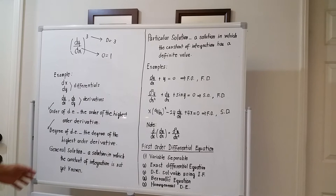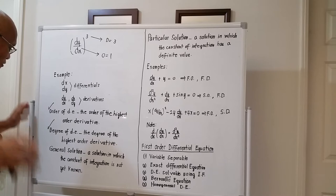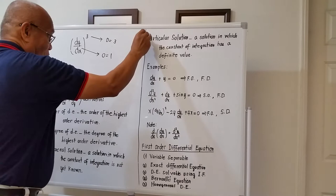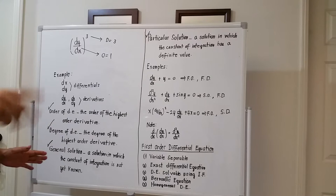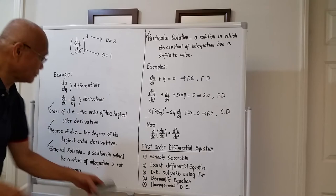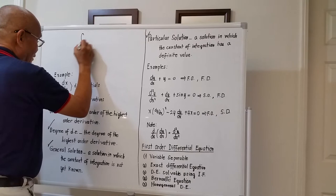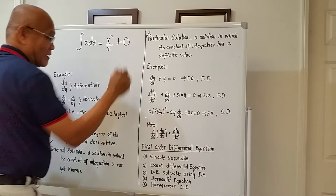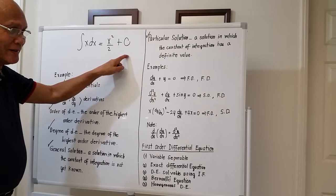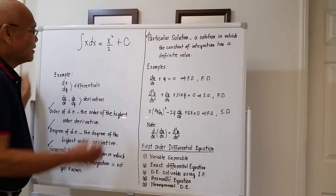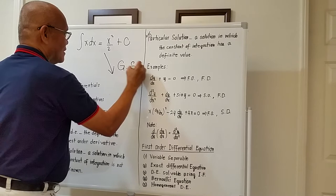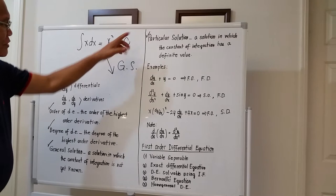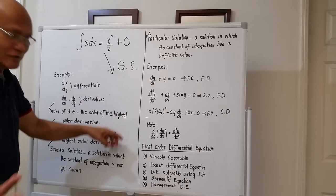I would also like to bring up two types of solutions. In differential equation, there is the so-called general solution and the particular solution. General solution is the same as in integral calculus — if you integrate X DX, you get X squared over 2 plus C. Since C is not known, we call this the general solution. If the constant of integration is not known, the solution is a general solution.